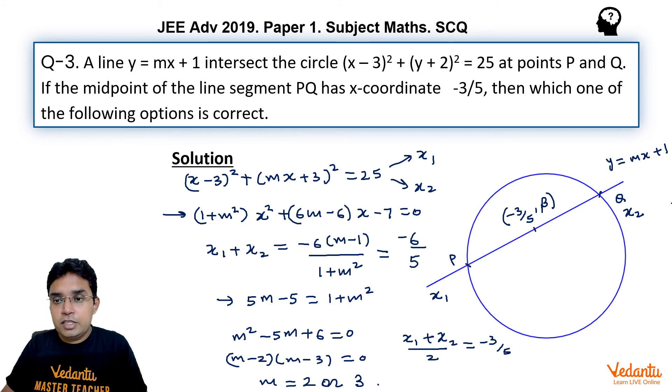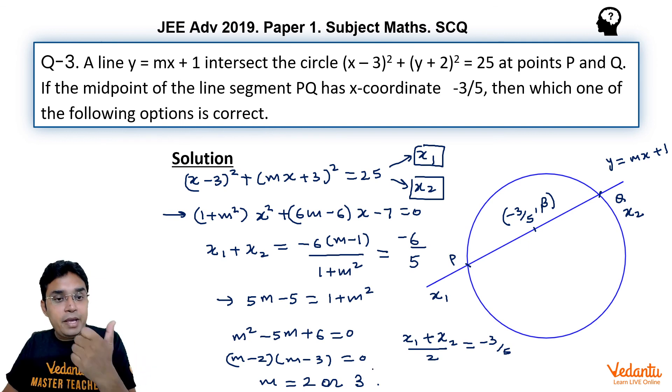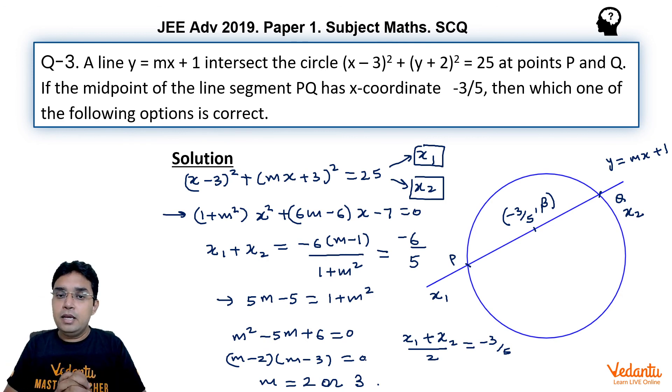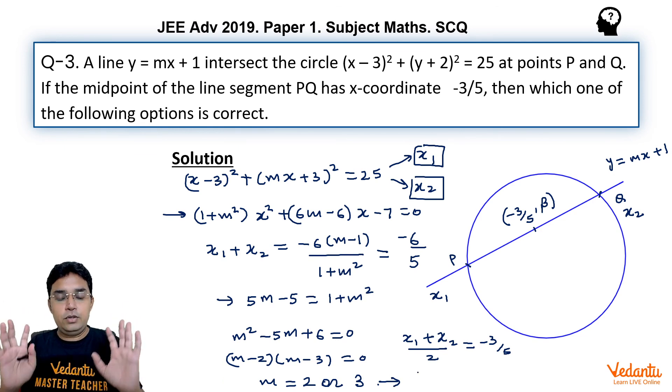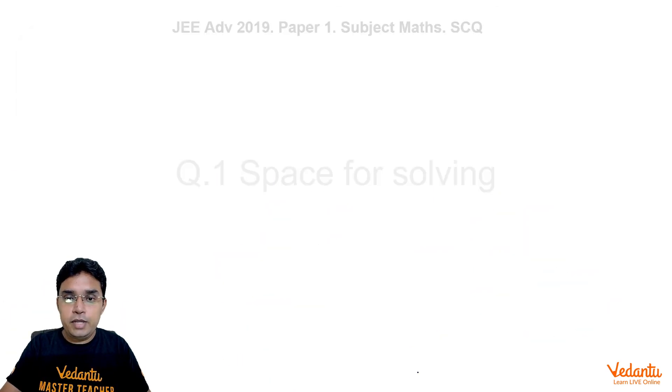Suppose in this question this point was lying outside and some line were not cutting or touching this circle. In that case, your roots x1 and x2 will be imaginary, but their sum can still be real. So if you go by this method, even without knowing whether roots are real or not, we may get m equals 2 or 3. But by giving (0, 1) like point, they have made sure that we do not have to check anything else, but just get the answer and that should be authenticated answer, perfect answer. No doubt about that. So that is all about this question.